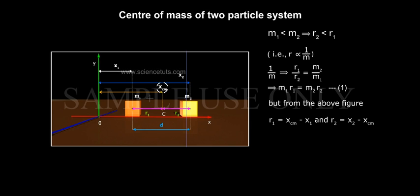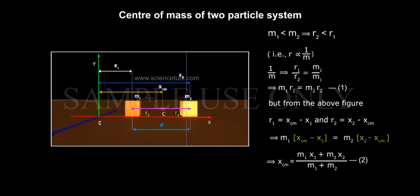But from the above figure, R1 equals Xcm minus X1, and R2 equals X2 minus Xcm. That implies M1 times (Xcm minus X1) equals M2 times (X2 minus Xcm). That implies Xcm equals (M1 X1 plus M2 X2) by (M1 plus M2), equation 2.